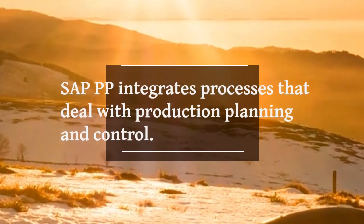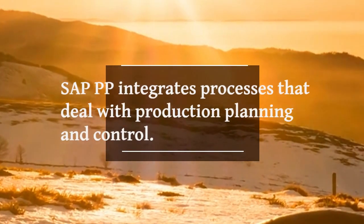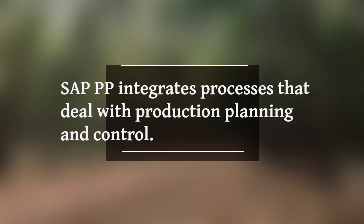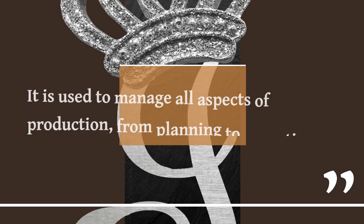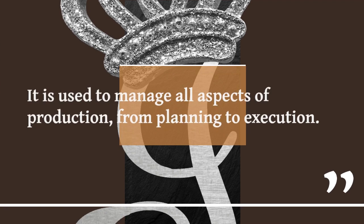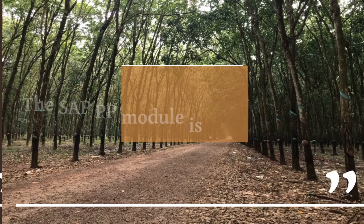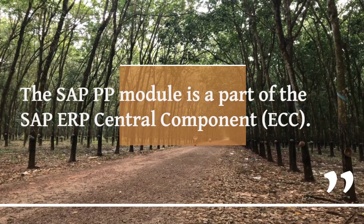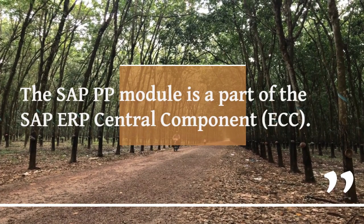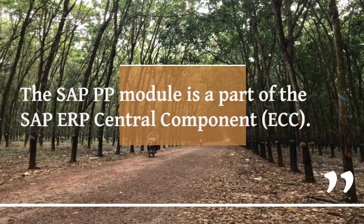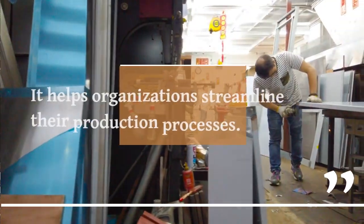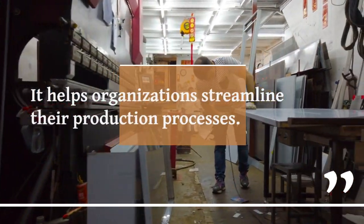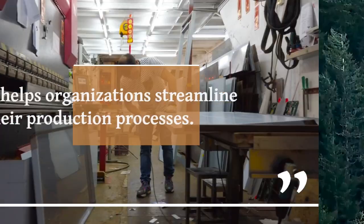SAP PP integrates processes that deal with production planning and control. It is used to manage all aspects of production, from planning to execution. The SAP PP module is a part of the SAP ERP's central component, ECC. It helps organizations streamline their production processes.